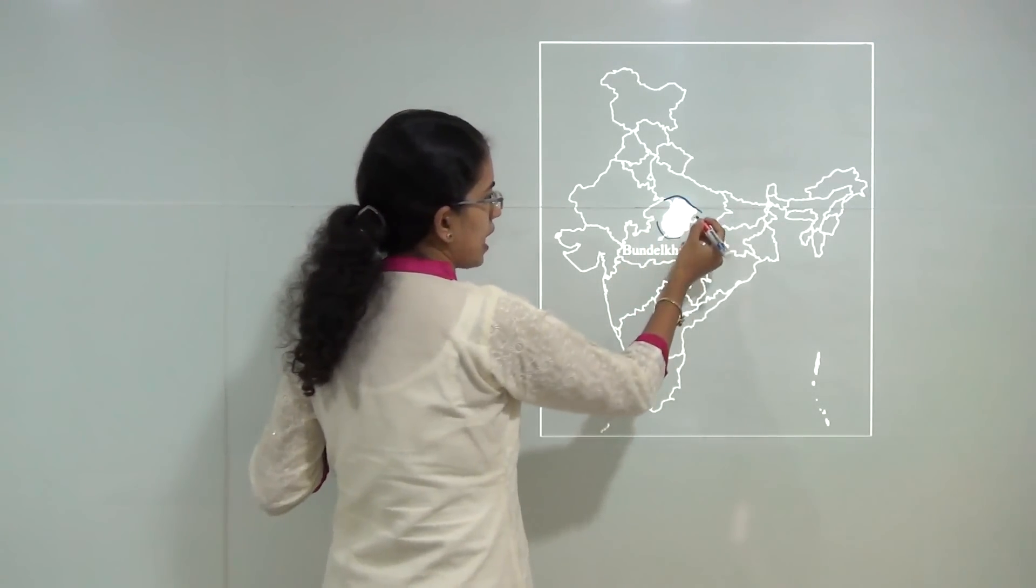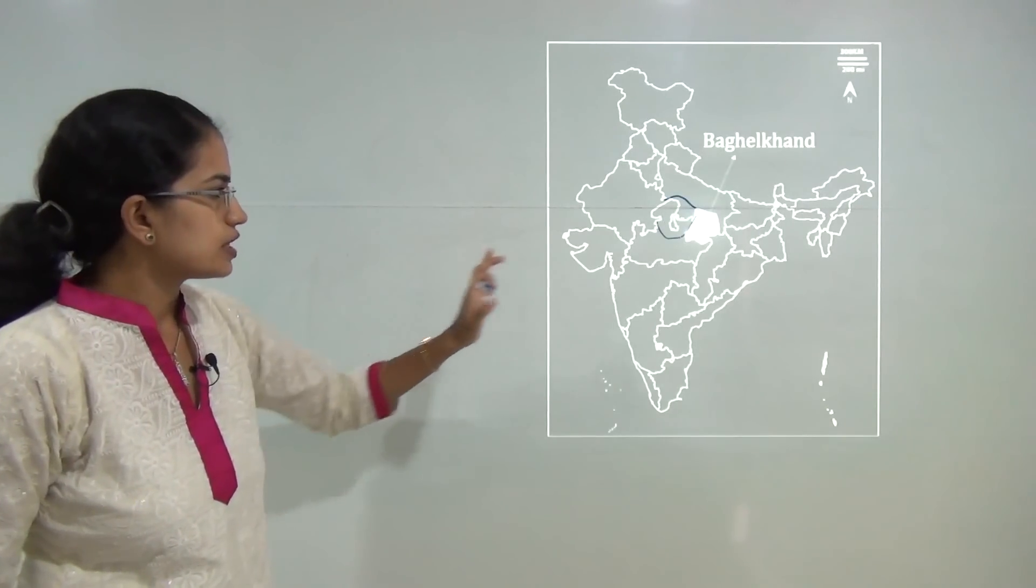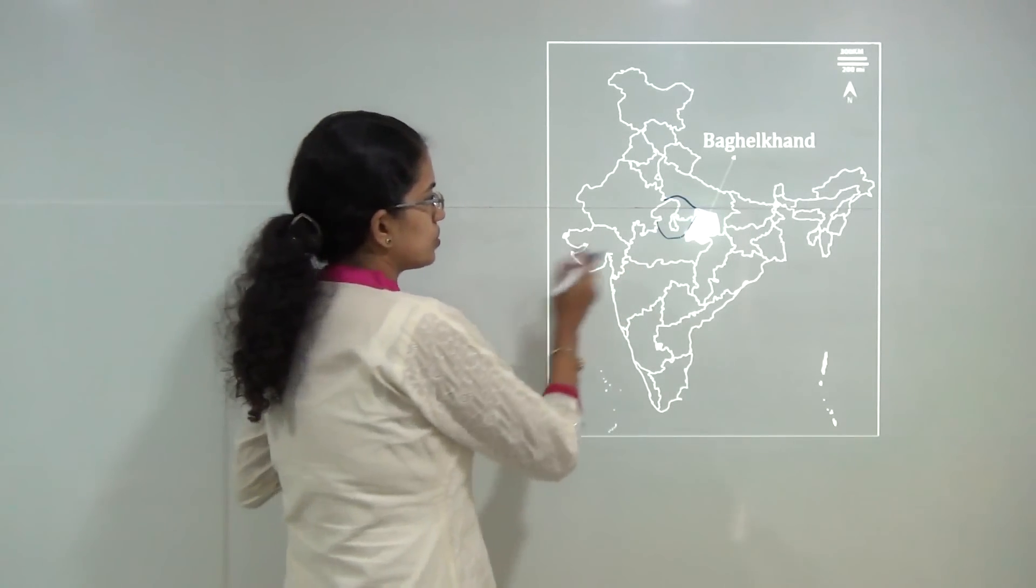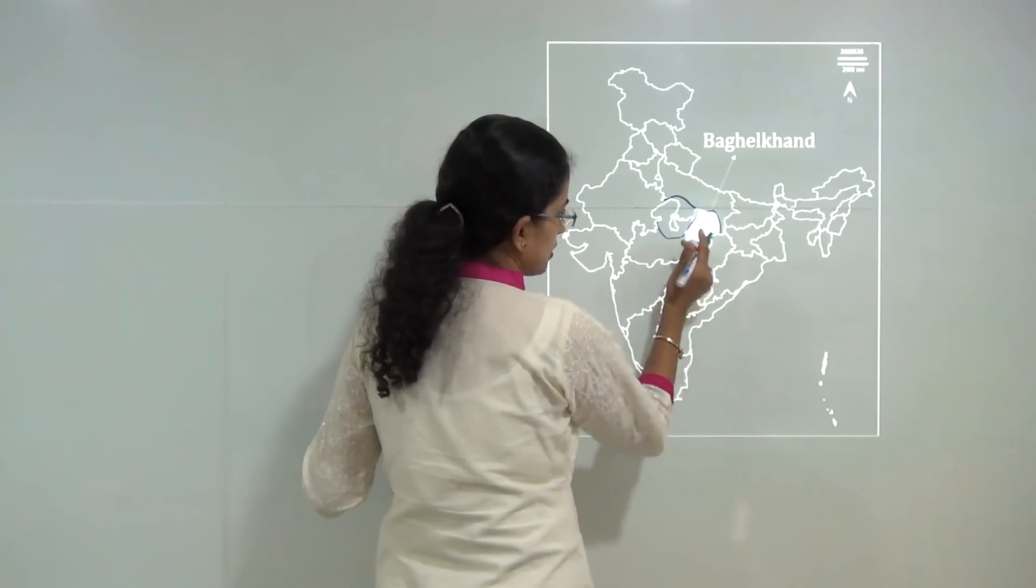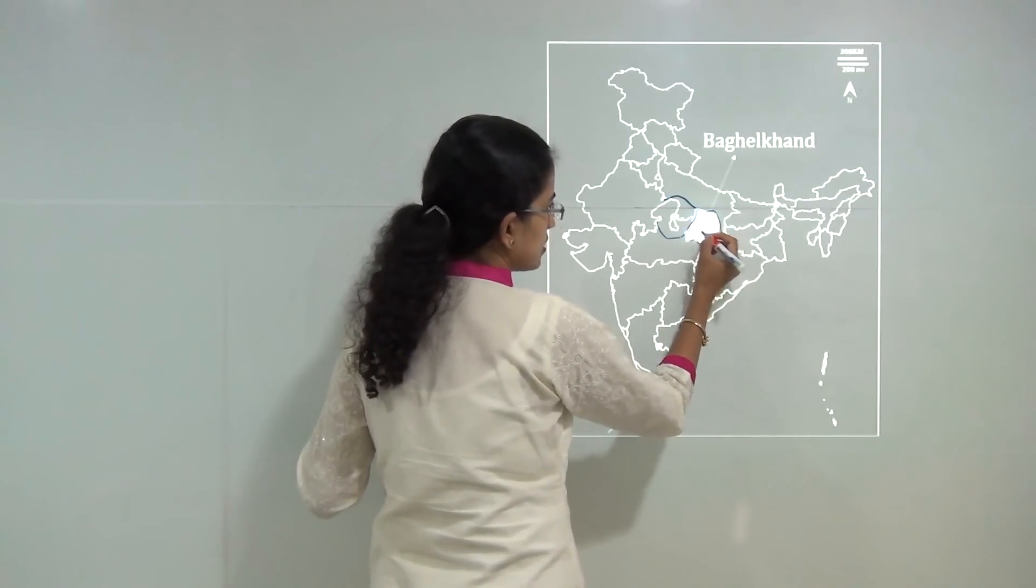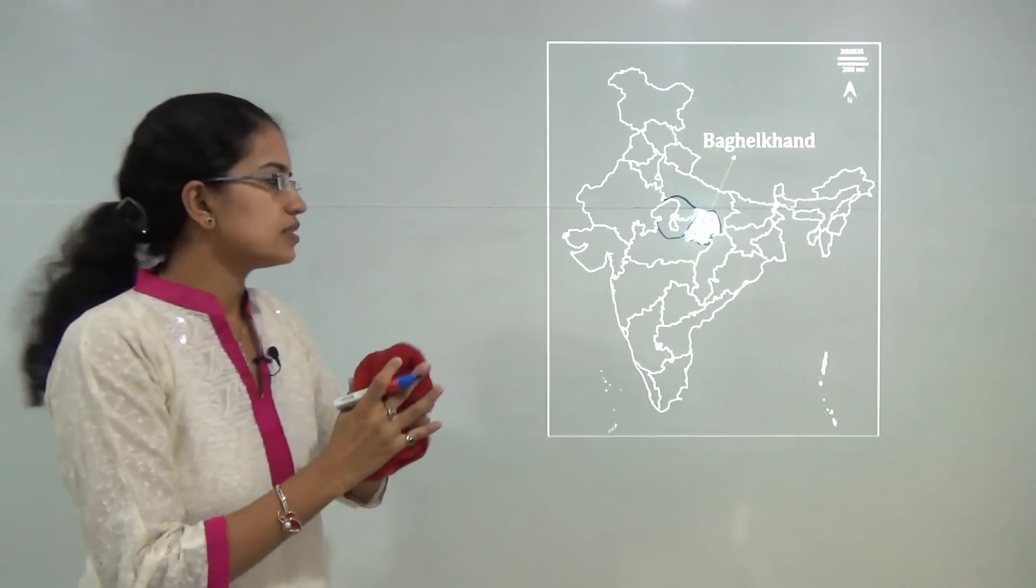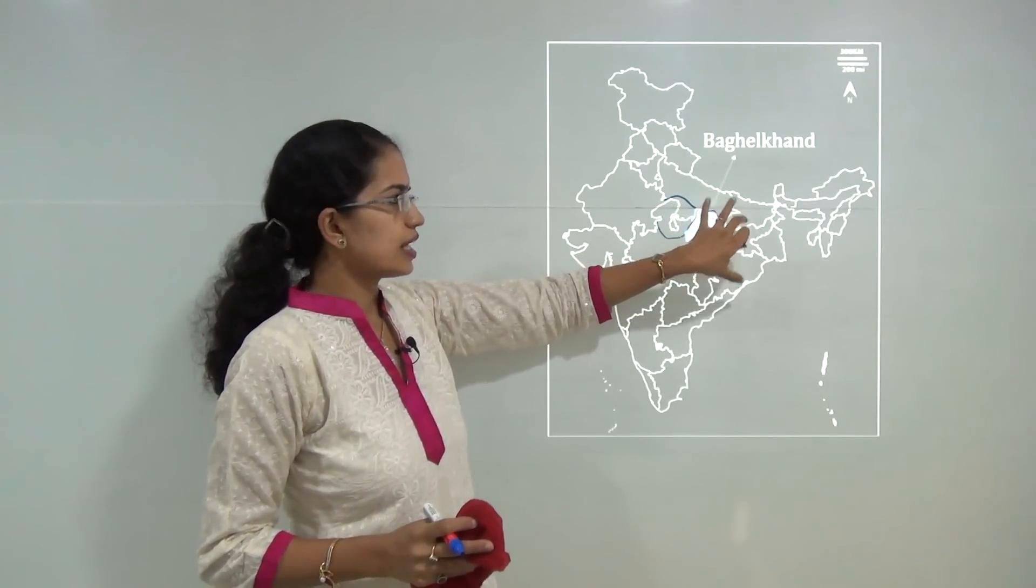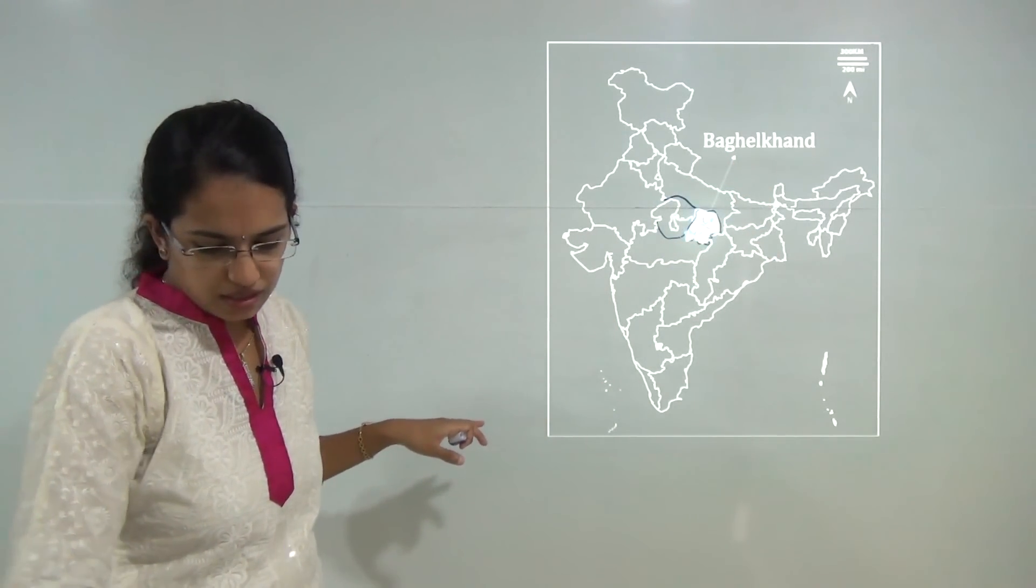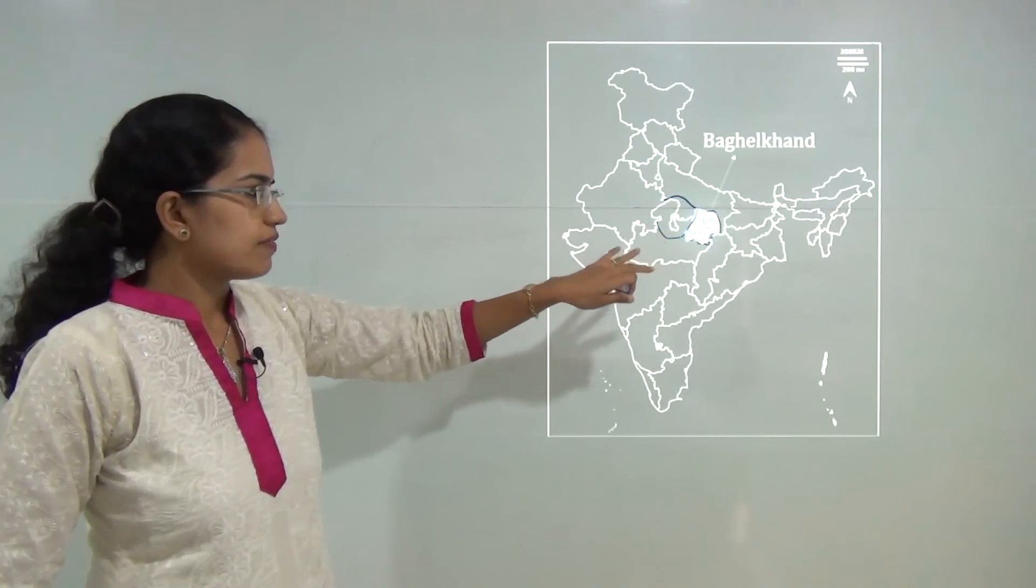Next is Bagelkhand. Towards the east that borders is Bagelkhand. Bagelkhand is covering two regions - parts of Madhya Pradesh and southwestern parts of Uttar Pradesh. These are the major two areas covered under Bagelkhand region. Major regions here in MP would be Rewa, Shahdol, and in Uttar Pradesh it would mainly cover Singrauli and Chitrakoot.